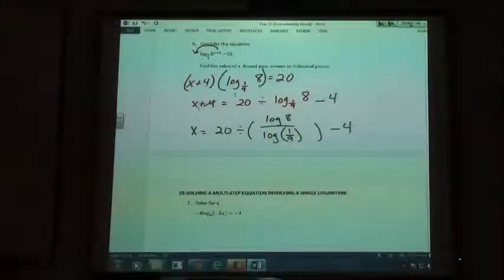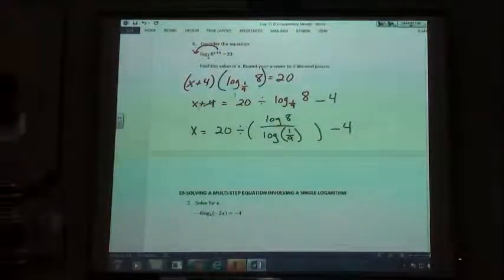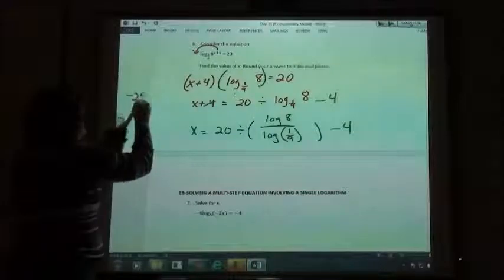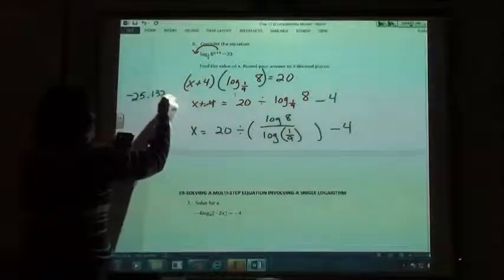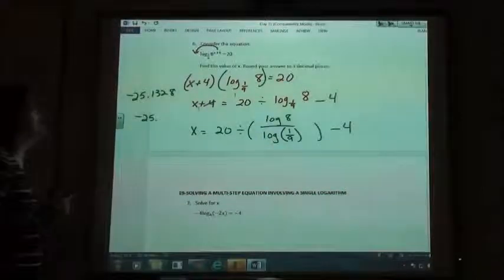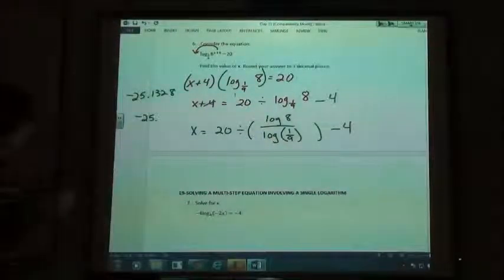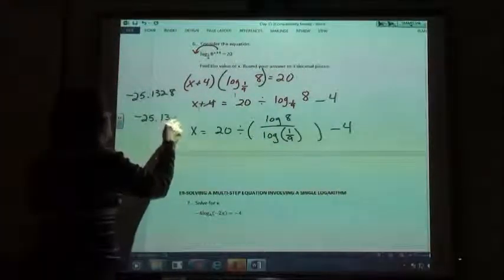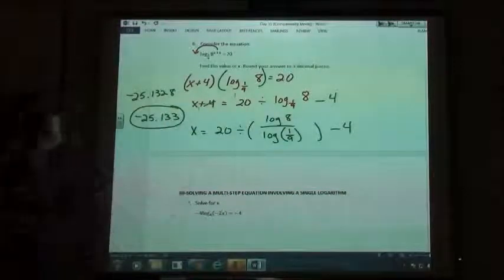So that's going to equal negative 25.1328. So rounding to three decimal places, we're going to get? Negative 25.133. Negative 25.133, exactly.